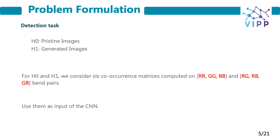The method proposed in this research work starts from the observation that reconstructing consistent relationships among color bands is expectedly more difficult for GANs. In order to exploit relationships among color bands, our proposal is to compute cross-band co-occurrences and use them as input to the CNN, in addition to spatial co-occurrences computed on the single color bands separately. We also expect color band features to be more robust to common post-processing operations.